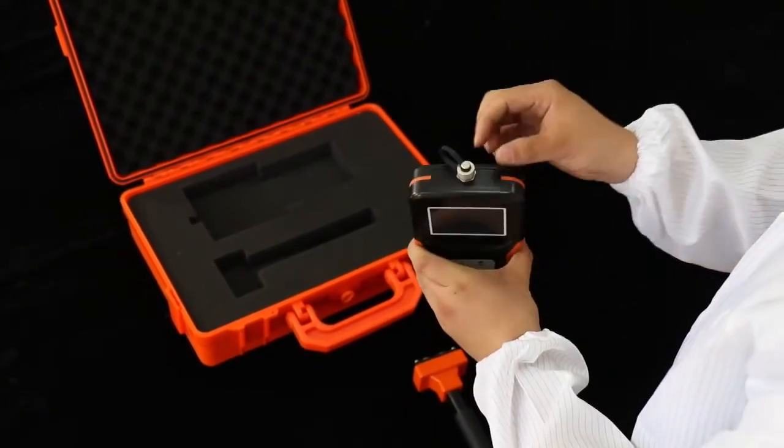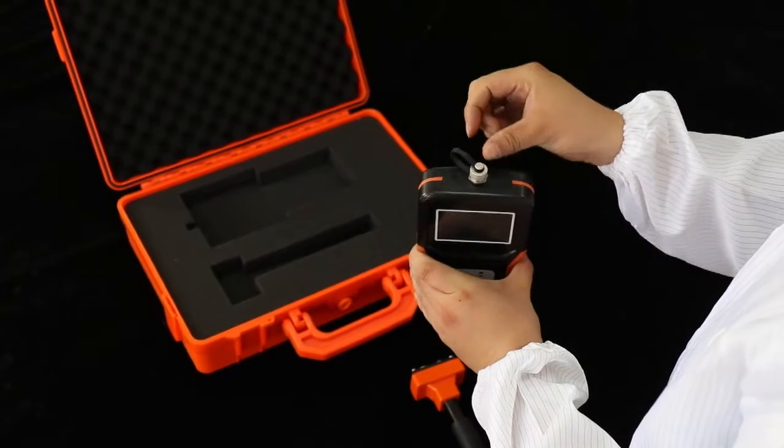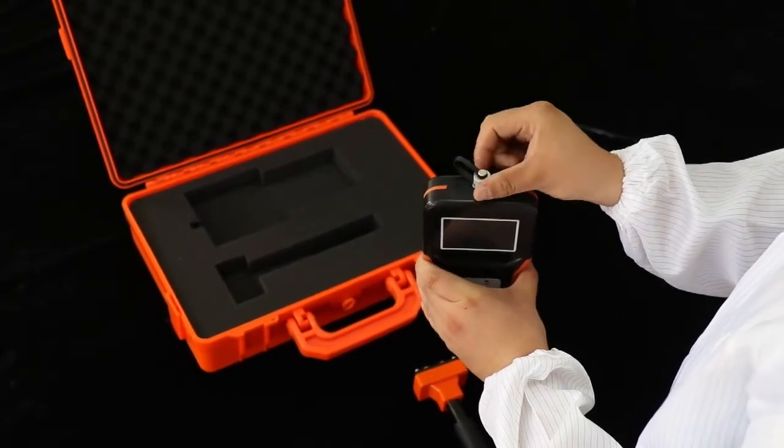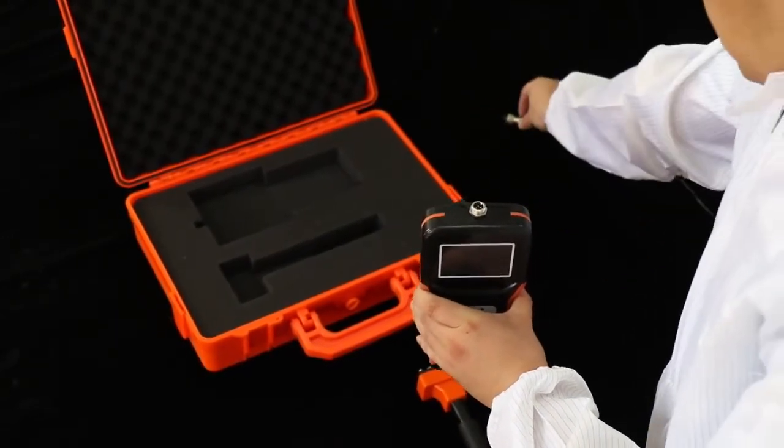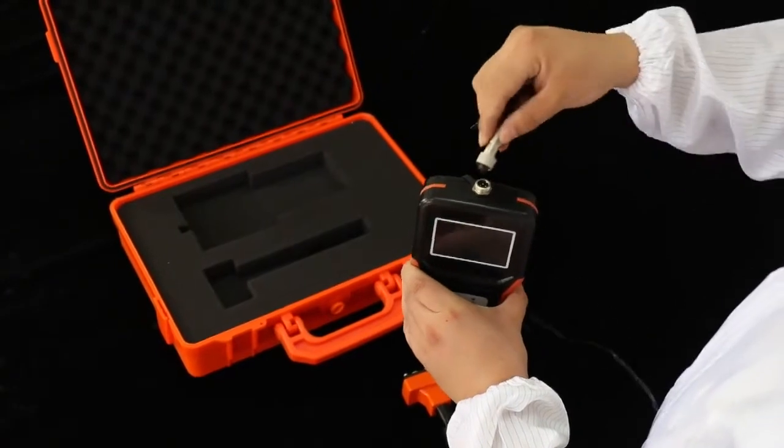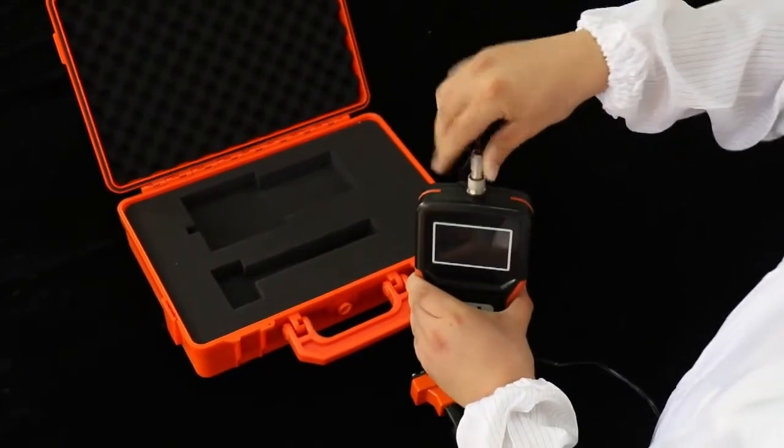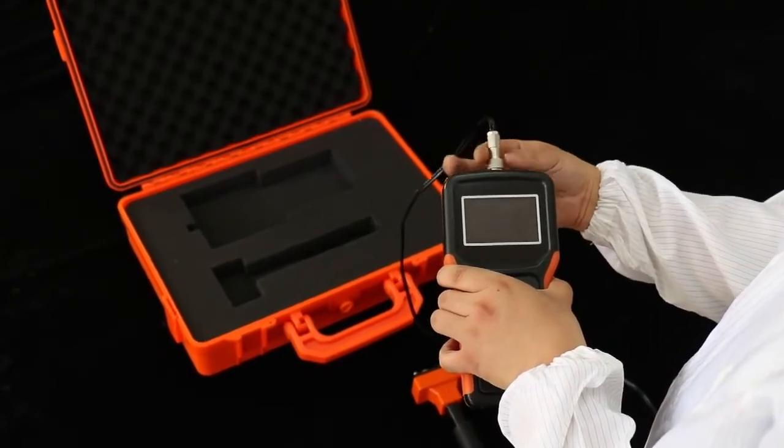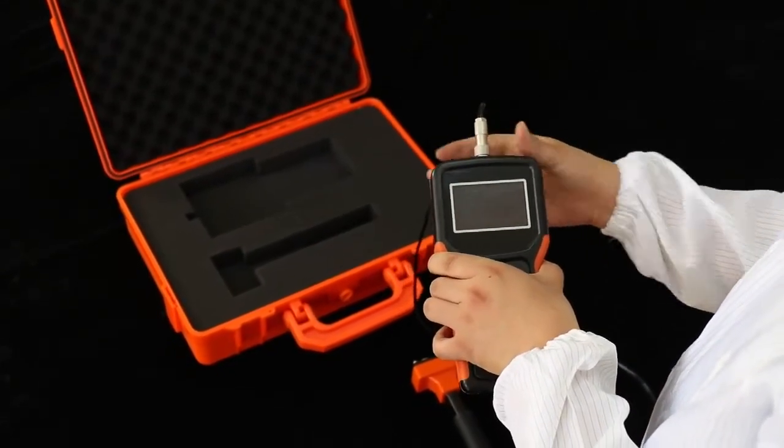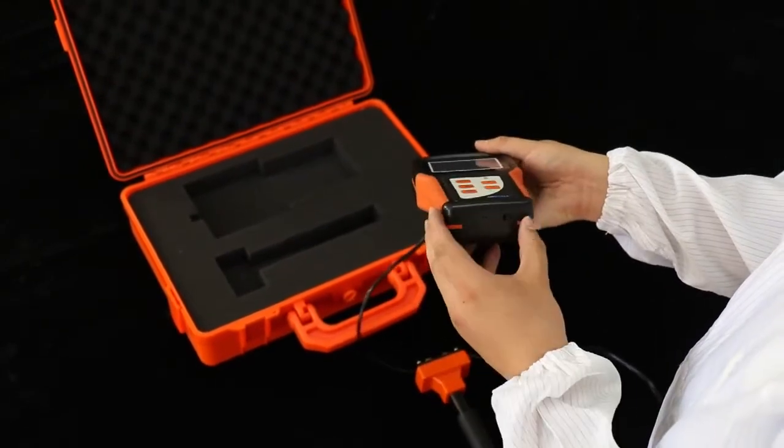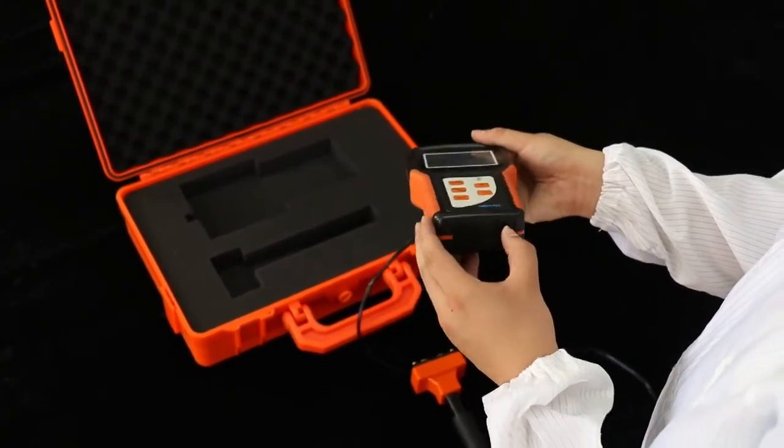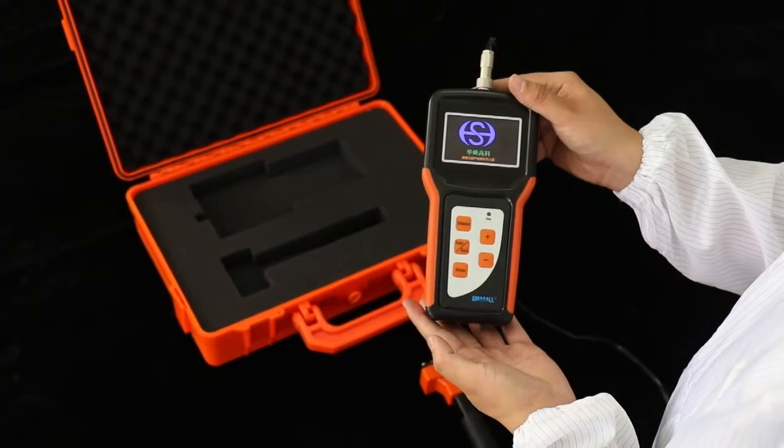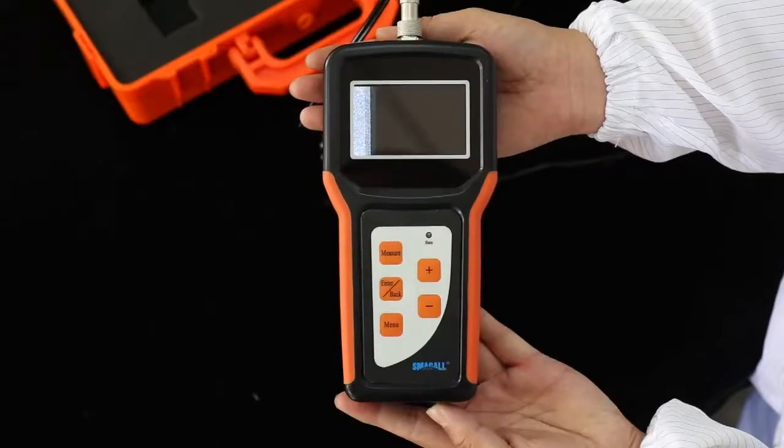The probe cover is located on the top edge of the handheld meter. Once the probe is installed and locked, turn on the indicator by clicking the power button at the bottom of the meter.